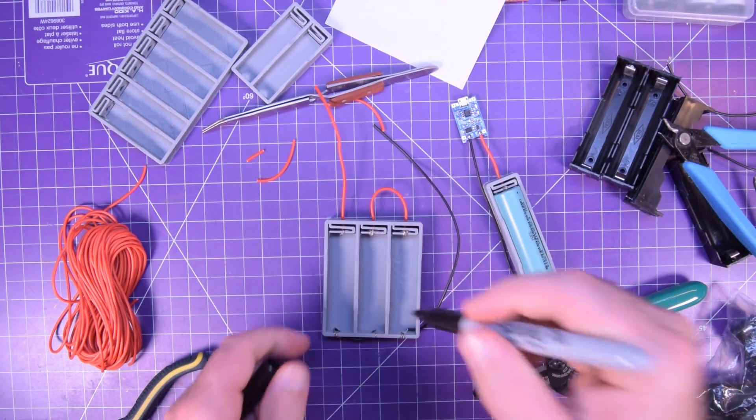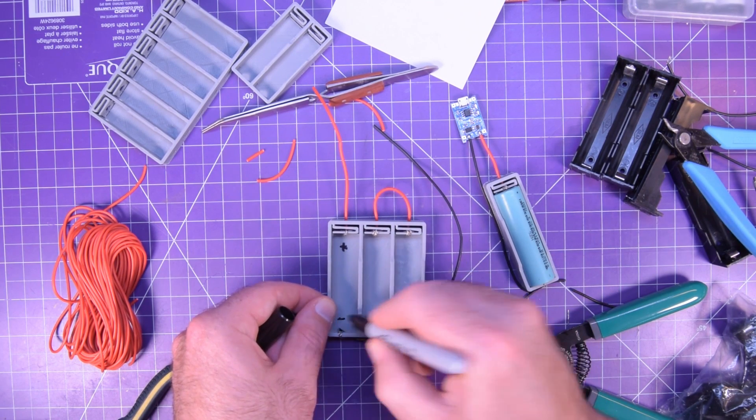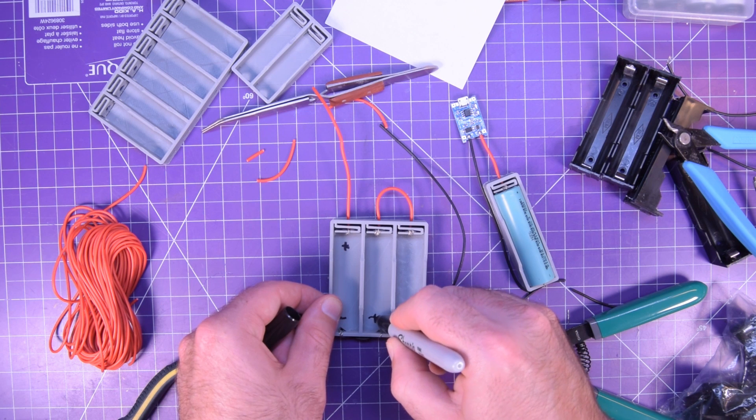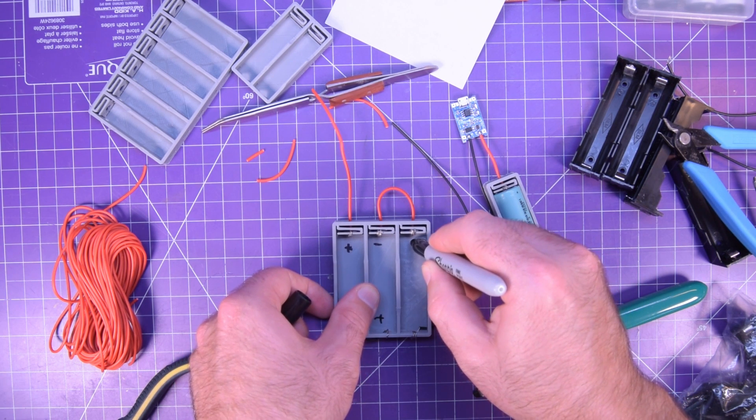So the last thing I would recommend doing is writing down the polarity because these boxes are polarity agnostic. So just make sure you have them properly labeled for the way it's going to be on yours.